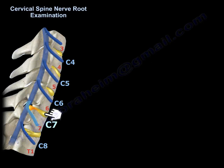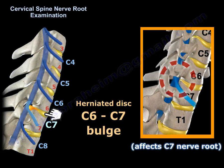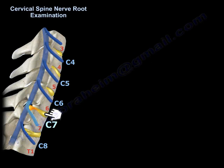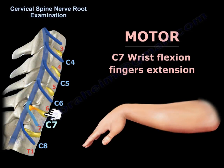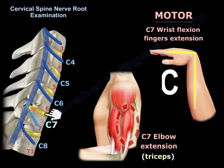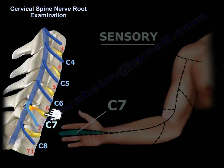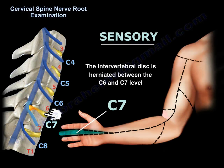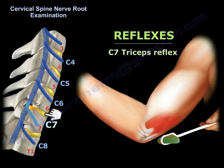A herniated disc between C6 and C7 will affect the C7 nerve root. The C7 motor function involves elbow extension via the triceps, wrist flexion, and finger extension. The sensory distribution of C7 is the middle finger — so if sensation of the middle finger is affected, the disc is herniated at the C6-C7 level. The reflex for C7 is the triceps reflex.